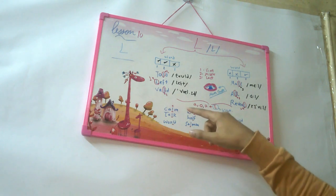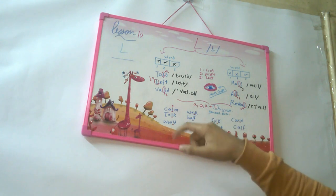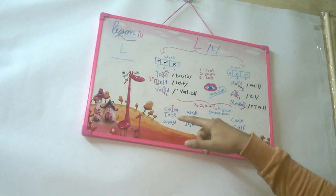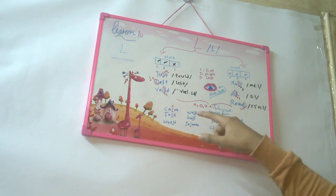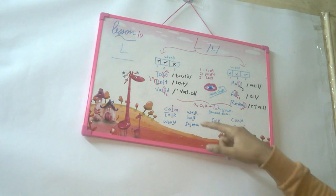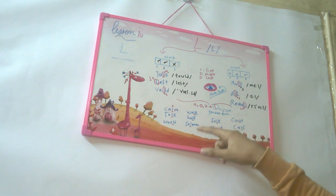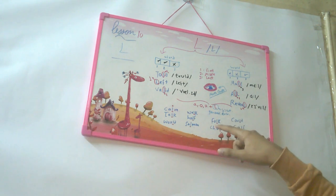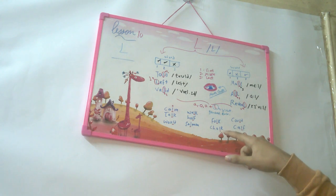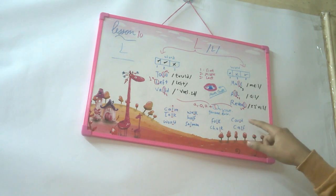So this word is calm, A-L. Talk, A-L. Would, U-L. Walk, A-L. Half, A-L. Salmon, A-L. Folk, O-L. Chalk, A-L. And could, U-L. And cough, A-L.